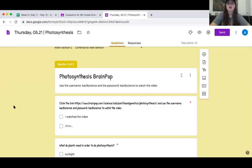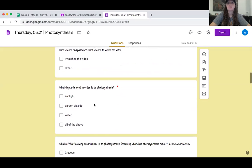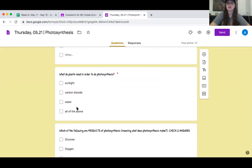Okay, so you should have watched the Brain Pop video and answered the questions, but I'm going to go over them just to make sure that you have everything understood. So for the photosynthesis Brain Pop video, what do plants need in order to do photosynthesis? You should have said all of the above. They need sunlight, carbon dioxide, and water.